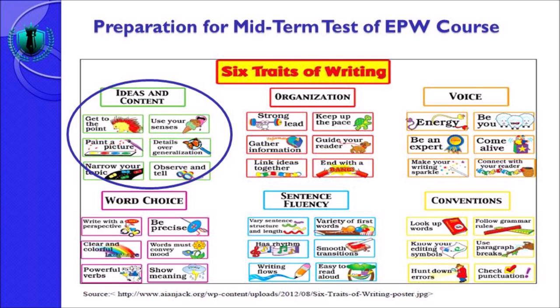Bentuk kelima adalah narrow your topic — mempersempit topik. Contoh, kalau saya tulis 'sate' saja itu sangat luas, jadi dipersempit menjadi 'sate pariaman' atau 'sate kuah labu'. Narrow your topic means that you have to limit the topic that you want to talk about. Caranya bisa dengan membuka video nomor 3 part 3 tentang writing topic sentence — controlling idea yang ada di topic sentence bisa mempersempit topik kita, tapi jangan terlalu sempit.